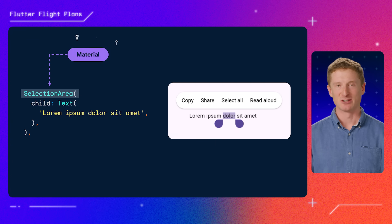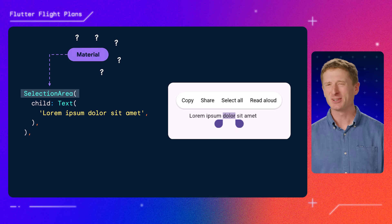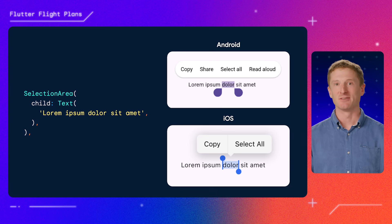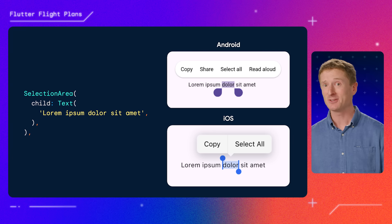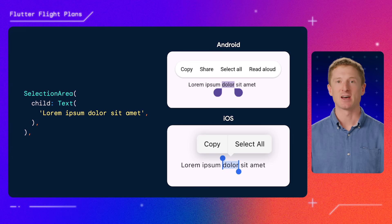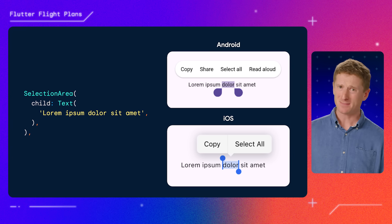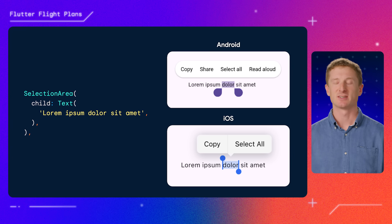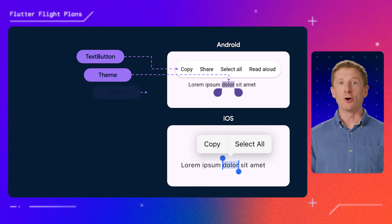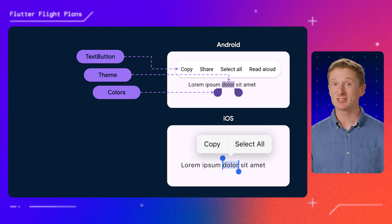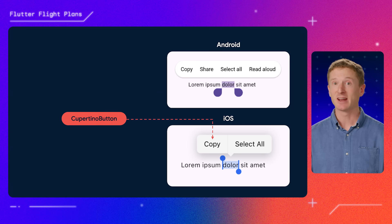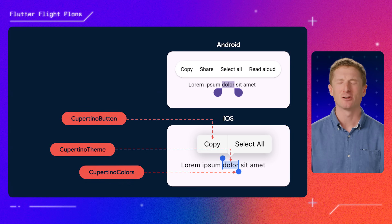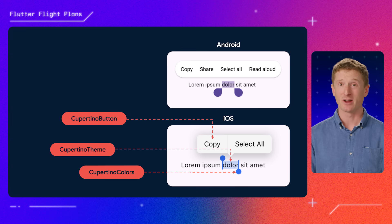But why is SelectionArea in the Material library? Because SelectionArea is adaptive. It presents the Material Selection UI by default, and when it detects an iOS runtime, it quietly switches to Cupertino. This way, you get the correct Selection UI for free just by using SelectionArea. That means that, under the hood, SelectionArea needs to access Material buttons, theming and colors on Android, and Cupertino buttons, theming and colors on iOS. So not only does SelectionArea live in the Material library, but it also imports Cupertino so that it can be adaptive.